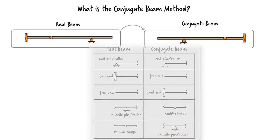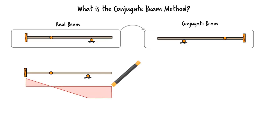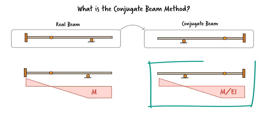We then draw the moment diagram for the real beam, divide the moment values by EI, then place the M over EI diagram as a distributed load on the conjugate beam.